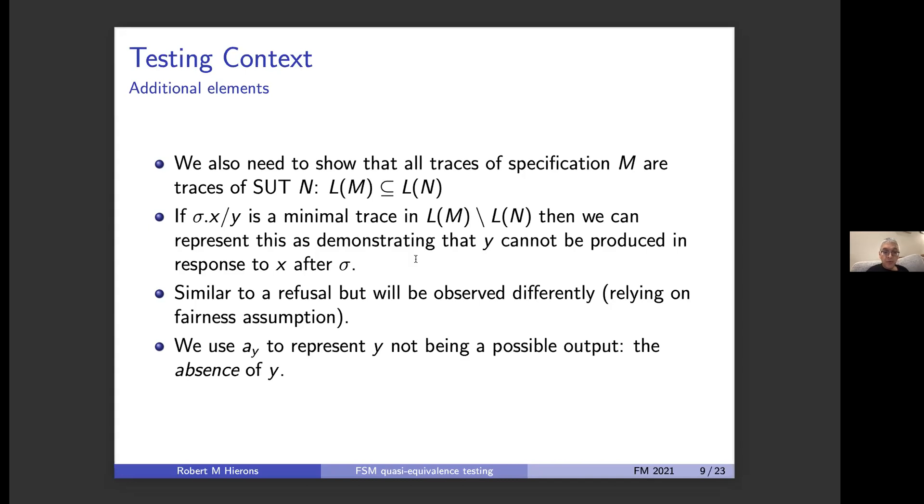Of course we can, if we have a fairness assumption. Essentially, we can at the end of sigma apply x and repeat this process a sufficient number of times so that we're happy that we can't observe y, subject to some threshold. If we have to be able to observe this, then the thought is, why don't we represent this in our model? So what this paper simply did was, for each output y, to add a new symbol that we can think of as an output that corresponds to observing the absence of y—that y not being possible in response to that input. So we enrich our models.